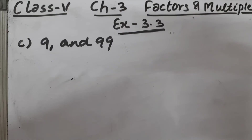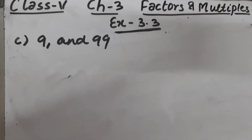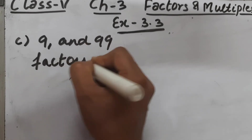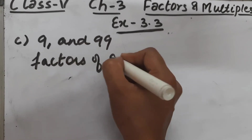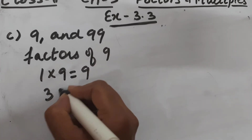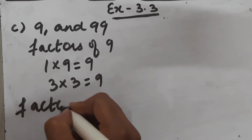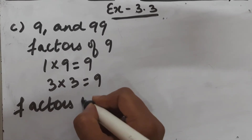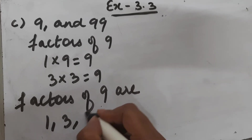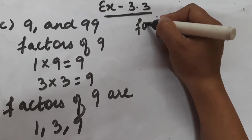Part C is 9 and 99. First we will write the factors of 9: 1 × 9 = 9, 3 × 3 = 9. So the factors of 9 are 1, 3, and 9.